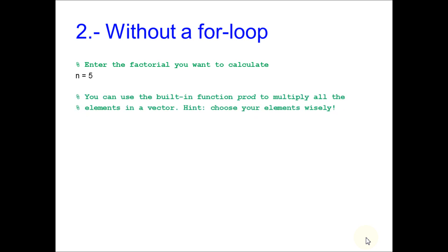You can use the built-in function prod to multiply all the elements in a vector. But you have to choose your elements wisely. You have a vector from 1 to n and you multiply all the elements. You keep your result in variable F2.